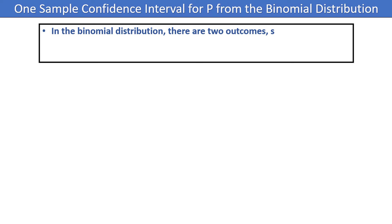I would advise watching my video on the binomial distribution if you aren't familiar with it before watching this one. Recall that in the binomial distribution, there are two outcomes, success and failure, where x represents the number of successes in n trials, and p represents the probability of success on each trial.